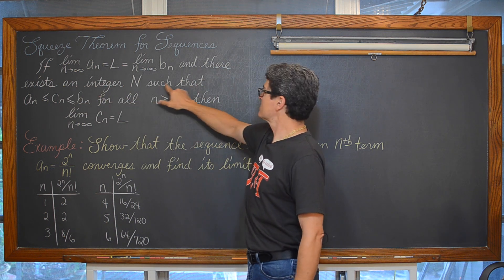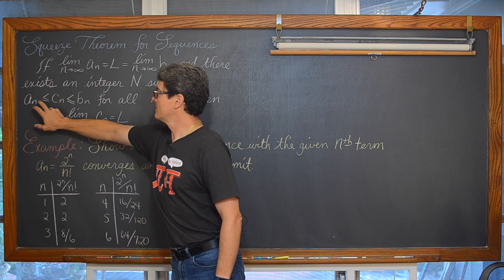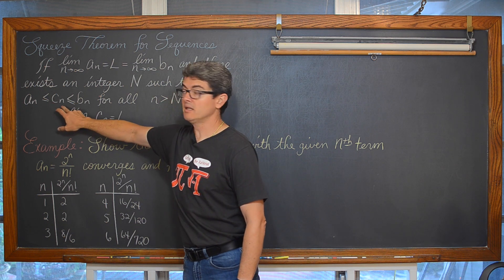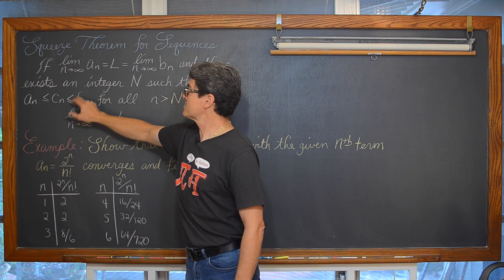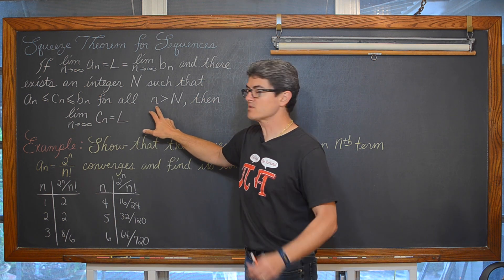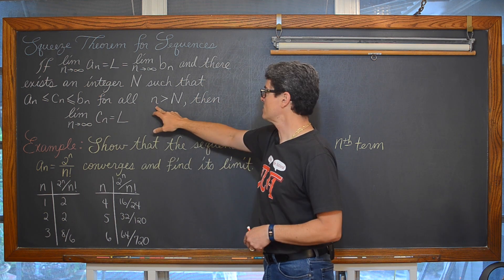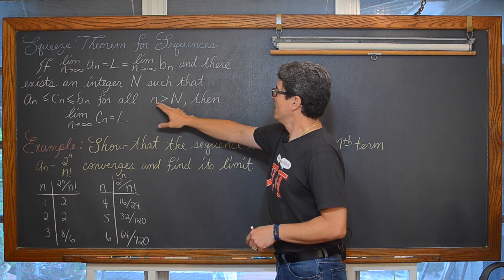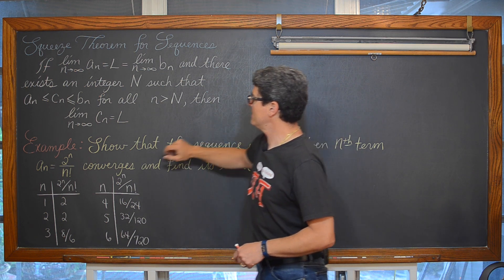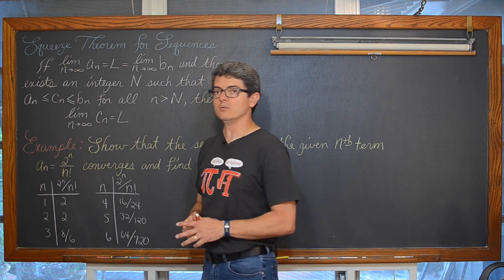an integer capital N such that a sub n is less than or equal to c sub n, which is less than or equal to b sub n for all n — now we are talking about those positive integers which is the domain of our sequence — for all n greater than capital N, then the limit as n approaches infinity of c sub n is equal to L.